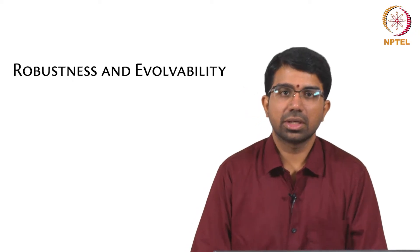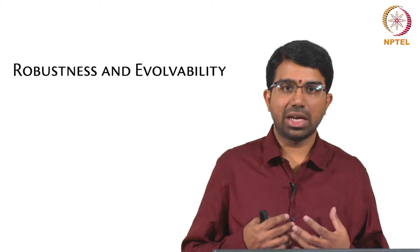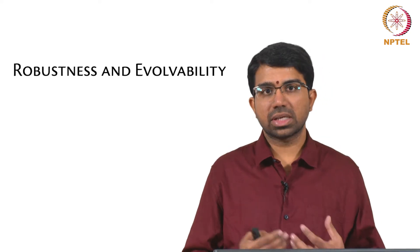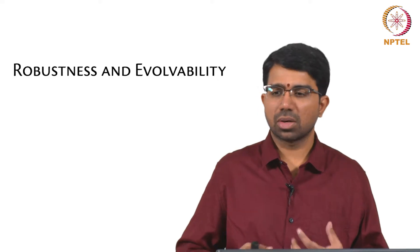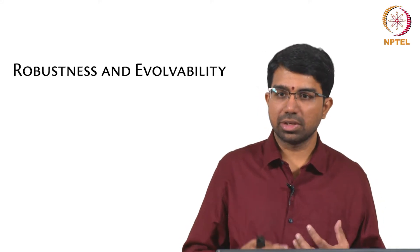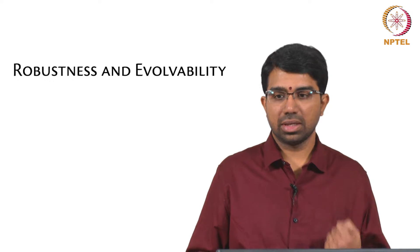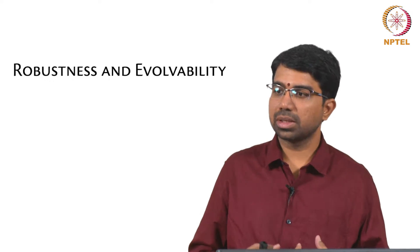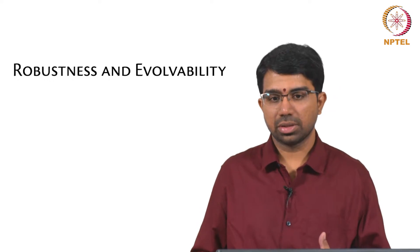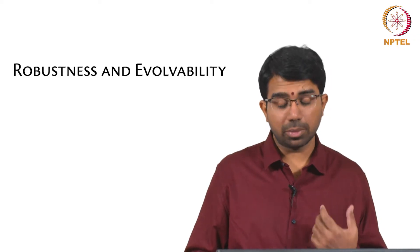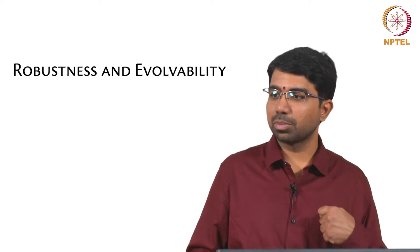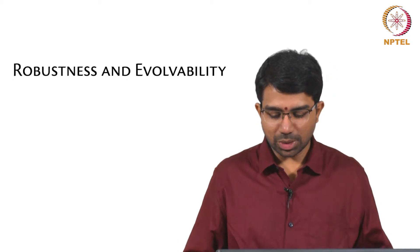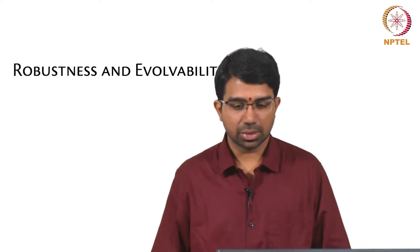In the previous class we studied how robustness is a very common feature of biological systems, and we ended on the note that robustness and evolvability are actually co-existent in biological systems, which sounds counter-intuitive. Robustness is the ability to resist change whereas evolvability is the ability to change and take on new functions, while robustness is the ability to preserve function. These two are surprisingly interrelated, as we will see today.